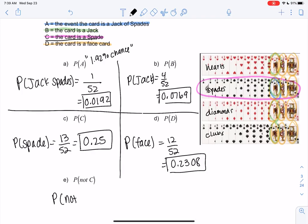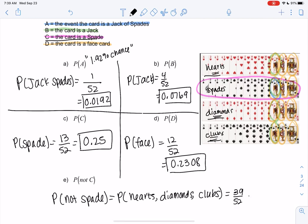And then our final example for this section is not C, which would be not a spade. So it just means it can be hearts, diamonds, or clubs. It means it can be everything else. And I think if we add those all up, there's 39. So there's 13, 13, 13. It ends up being 39 out of 52. And if you divide, you'll get 0.75.